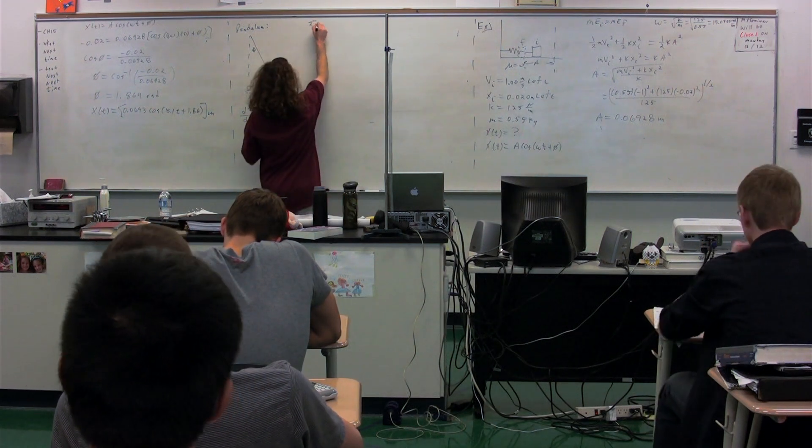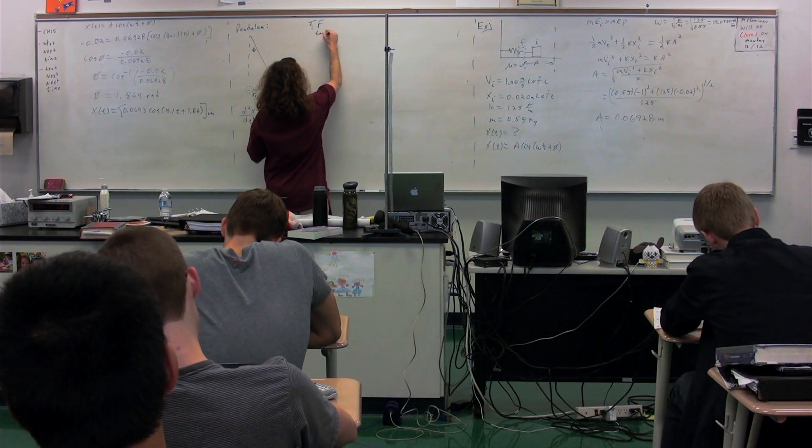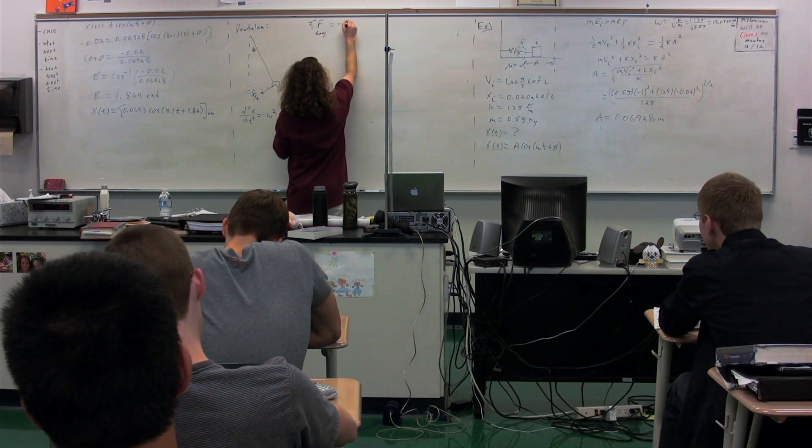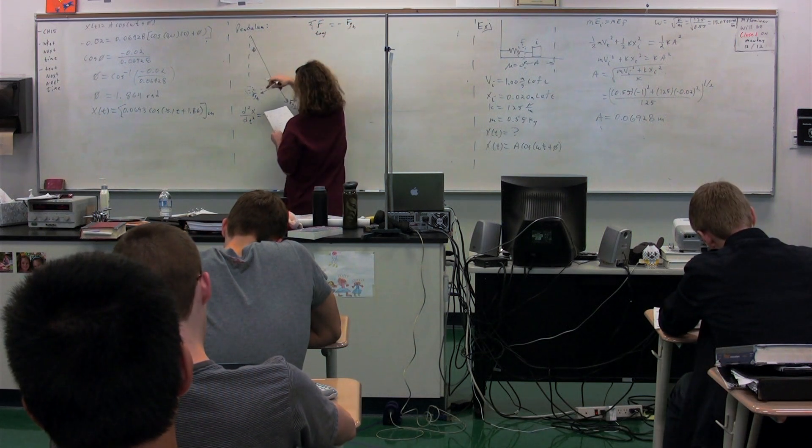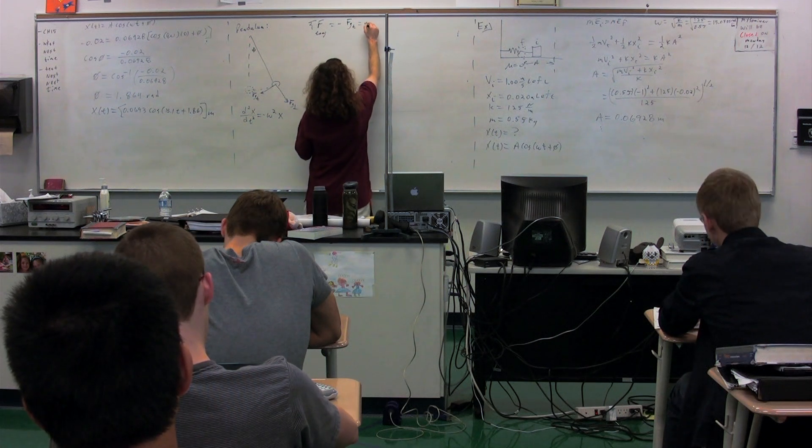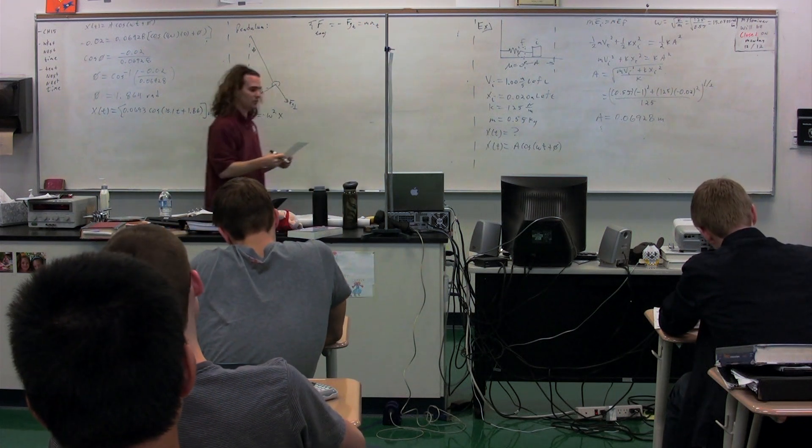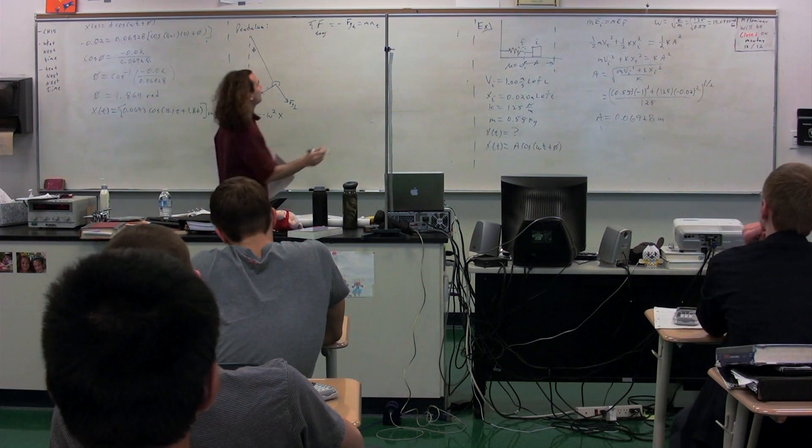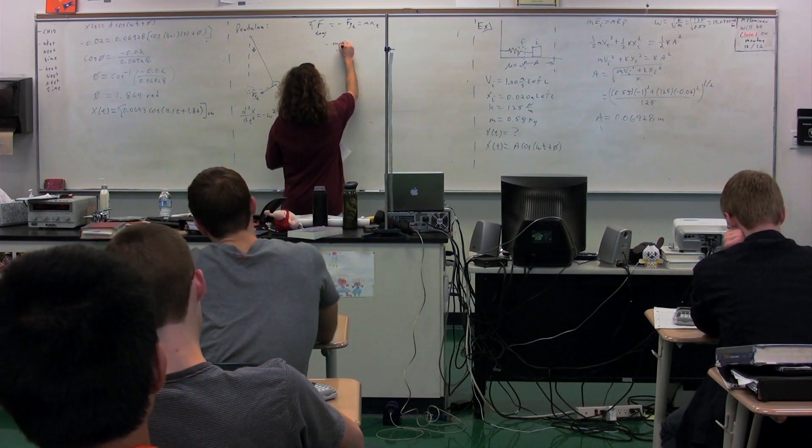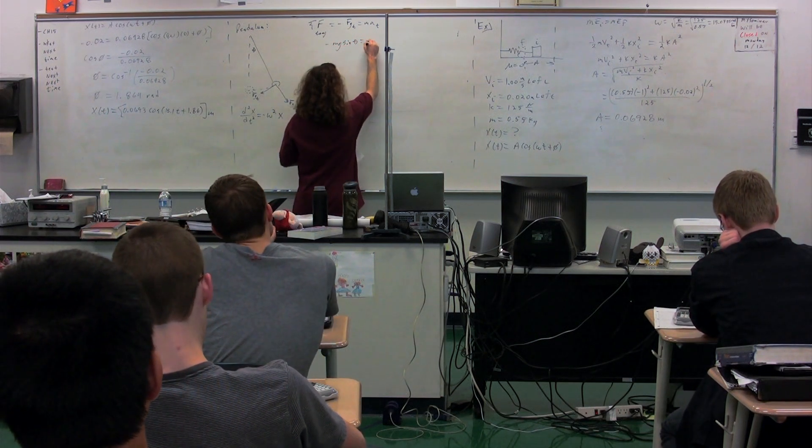So when we sum the forces in the tangential direction, we get the force, the negative of the force of gravity tangential, because it's down to the left, is equal to the mass times the acceleration in the tangential direction. The force of gravity tangential is negative mg sine theta.